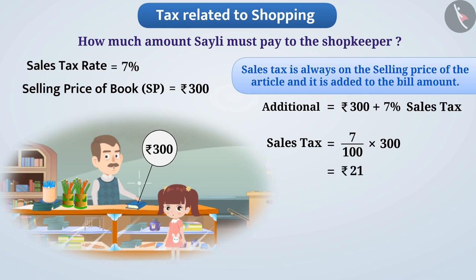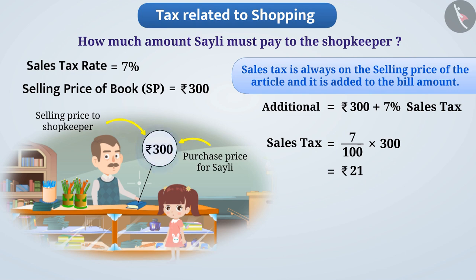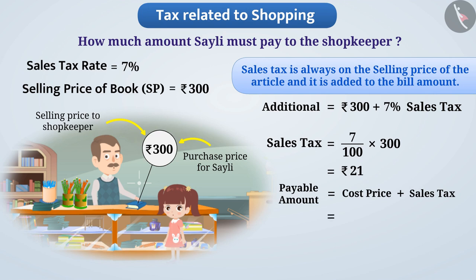Buying a book for 300 rupees incurs a sales tax of 21 rupees. Therefore, the payable amount = cost price + sales tax = 300 + 21 = 321 rupees.